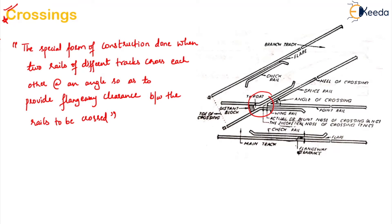Normally this crossing is made up of different pieces of rails. If you observe here there is one piece of rail, here there is one piece of rail, here there is another piece of rail, here there is another piece of rail. So how many pieces? Four to five pieces will be there, and this will entirely make up a crossing setup.